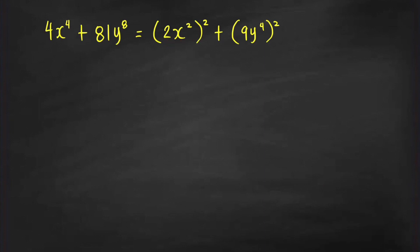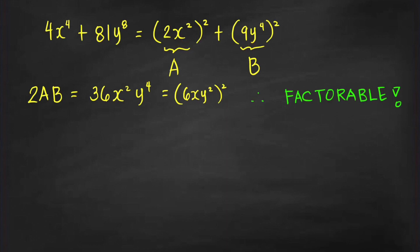Let's have another example: 4x raised to the 4th plus 81y raised to the 8th. We can write this as the square of 2x squared plus the square of 9y raised to the 4th. To check whether this sum of two squares is factorable, we look at 2AB. With A equal to 2x squared and B equal to 9y raised to the 4th, we get 2AB equals 2 times 2x squared times 9y raised to the 4th, which is 36x squared y raised to the 4th. This equals the square of 6xy squared — it is the square of a polynomial with integer coefficients. Therefore it is factorable.